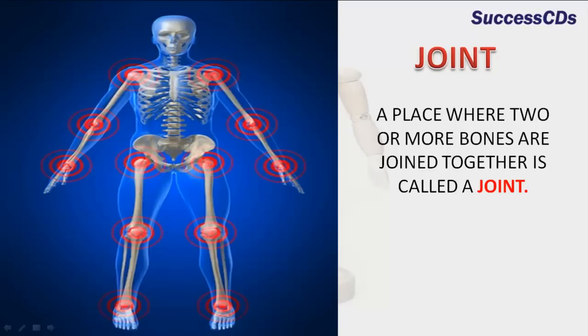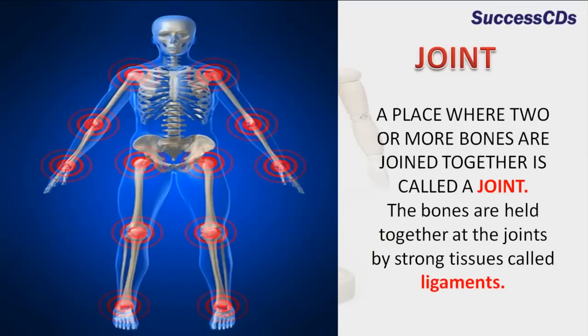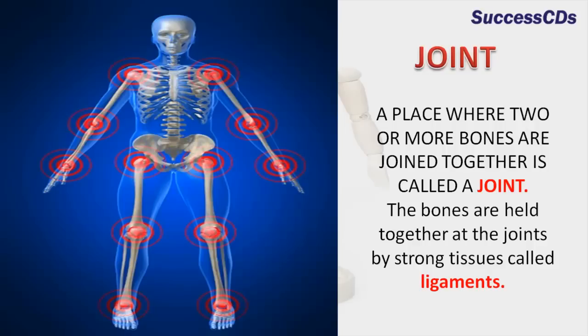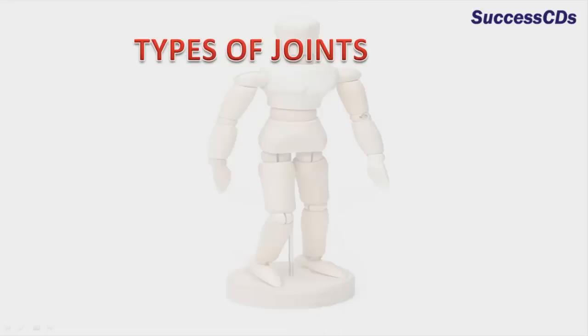A place where two or more bones are joined together is called a joint. The bones are held together at the joints by strong tissues called ligaments. There are mainly three types of joints.